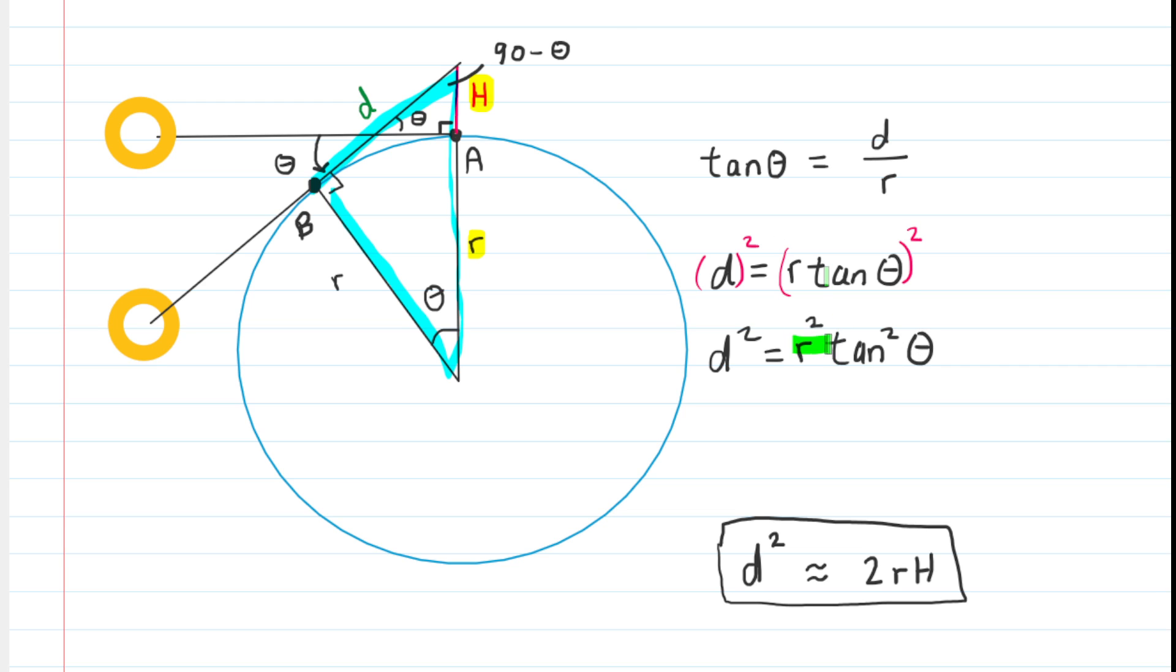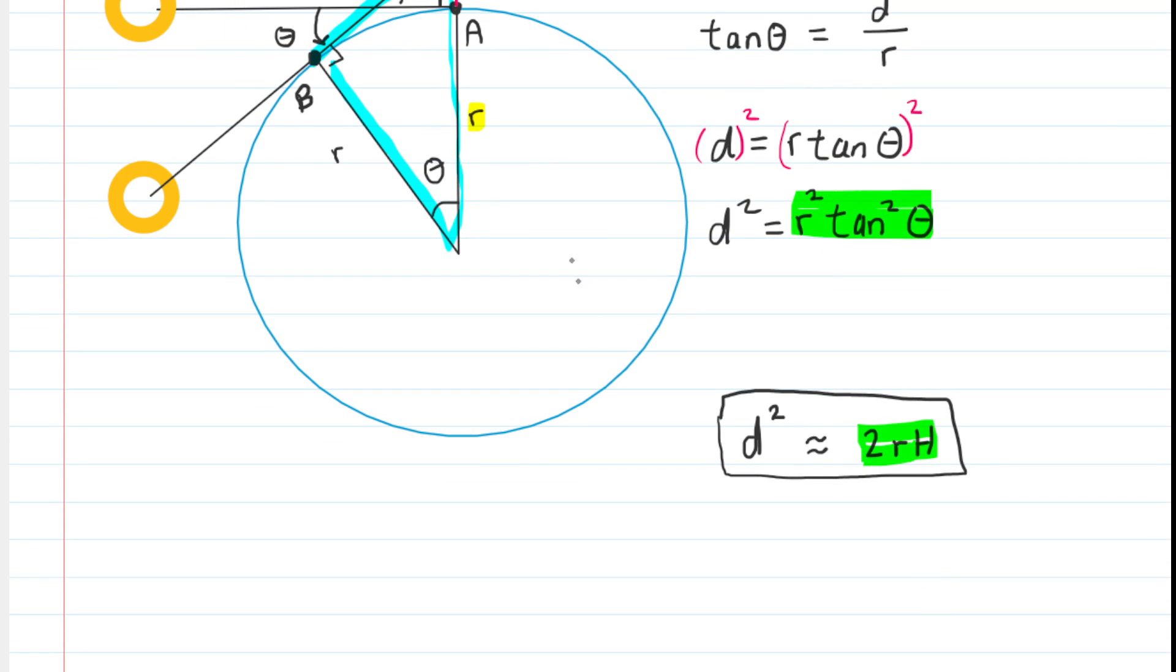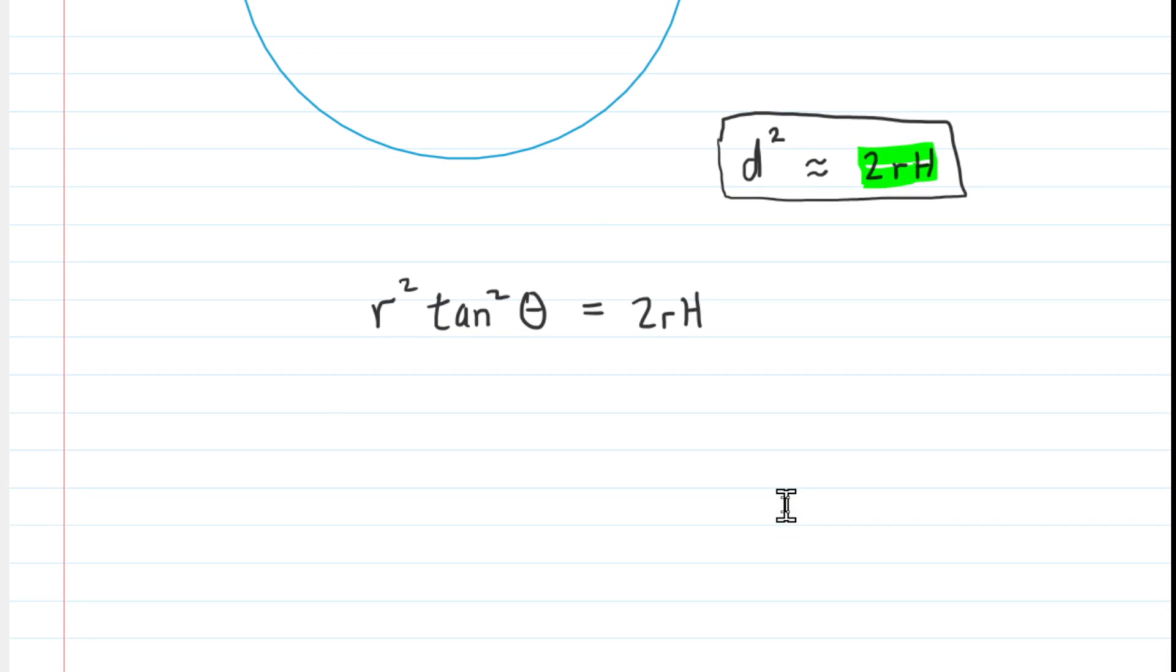Now, since this expression is equal to D squared, and this expression is also equal to D squared, we can set them equal to each other. So let's go ahead and do that. If we divide both sides of this equation by R, in fact, why don't we divide both sides by R tangent squared of theta? We're going to get this done in one step.